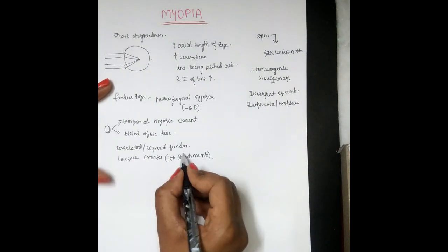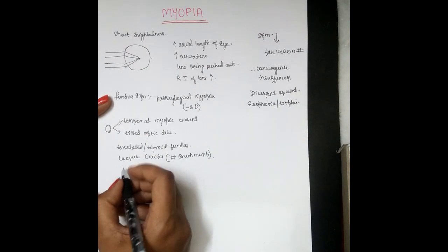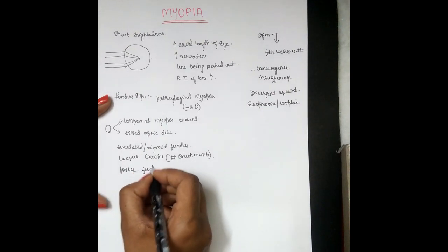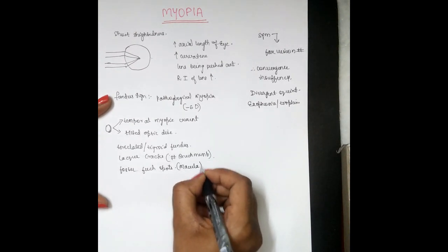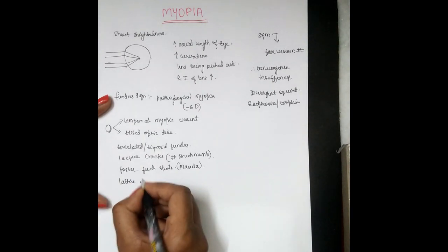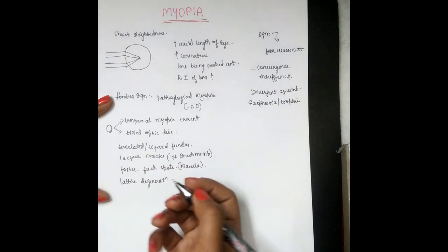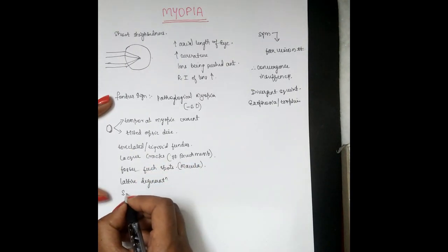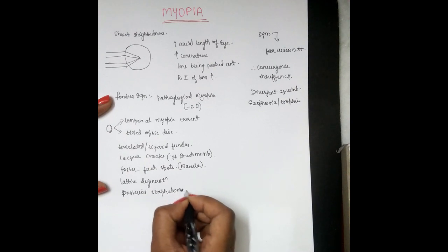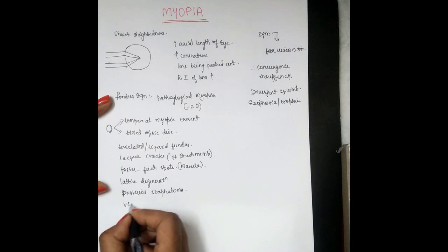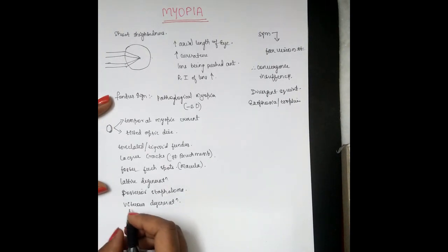There can be lesions associated with the macula — that is Foster-Fuchs spots. These are dark red circular patches at the macula. There can also be lattice degeneration, and due to all this degeneration there will be weakening and thinning of the eyeball wall, which results in staphyloma — most commonly posterior staphyloma.